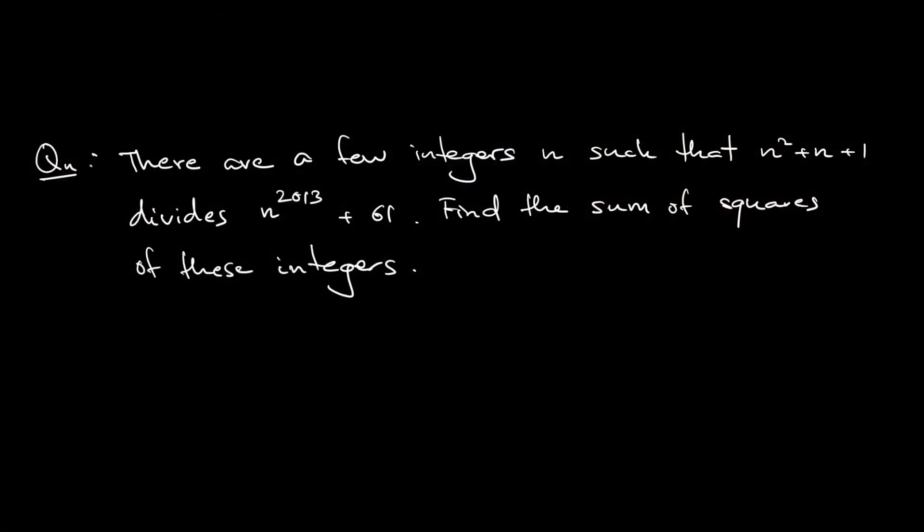Okay, let's read the question together. There are a few integers n such that n² + n + 1 divides n^2013 + 61. The question asks us to find the sum of the squares of those integers.